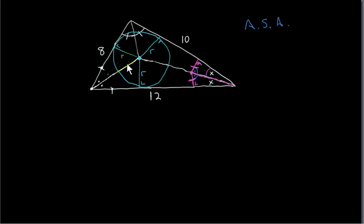So if we pick where two bisectors meet, then this point is on this bisector here, which proves that this perpendicular distance must equal this perpendicular distance. But this point is also on this bisector, which proves the perpendicular distance of this point to this arm of the angle must equal the perpendicular distance of this point to this side here. So we've proven that this one equals this one, and this one equals this one — so the three of them are the same. That means we can draw a circle with the sides of the triangle being tangents, because the radius is perpendicular to the tangent at those points. So we can draw a circle that fits exactly inside this triangle and touches at these three points.